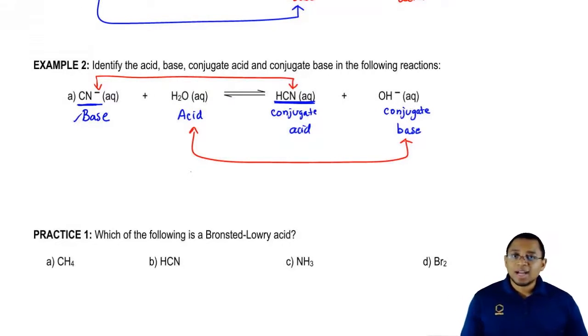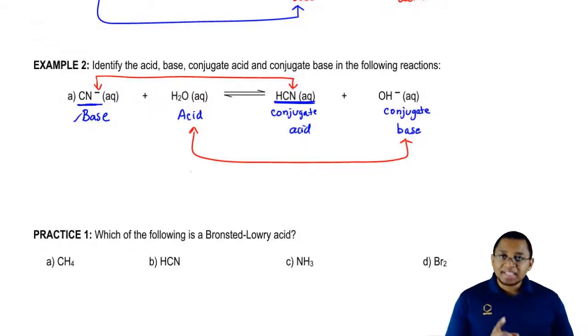And just realize, water acts as a base in the first example, but as an acid in the second. Something that can act as an acid or base we said was called amphoteric. So water is the best example of an amphoteric species. Depending on what it's next to, it could act as either an acid or a base.